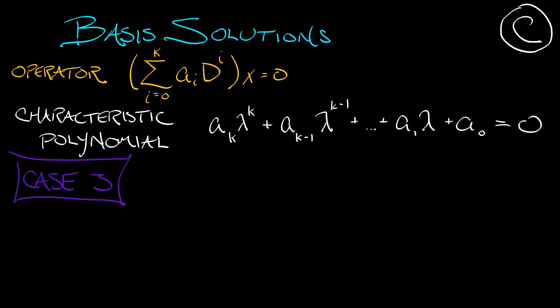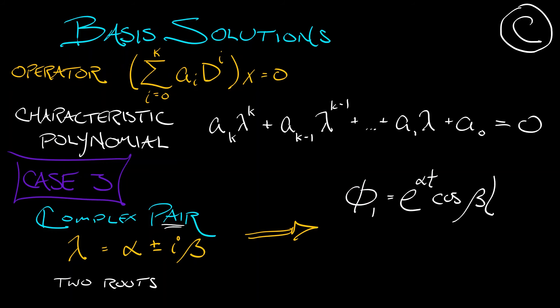Of course, the other case is that of a complex conjugate pair of roots. Let's say that lambda is equal to alpha plus or minus i times beta. This is two roots. And so it contributes two basis solutions to the final linear combination. The first is, just as it was in 2D, e to the alpha t times cosine beta t. And the second is e to the alpha t times sine beta t. The real part gives you the growth. And then the imaginary part gives you the oscillatory component.